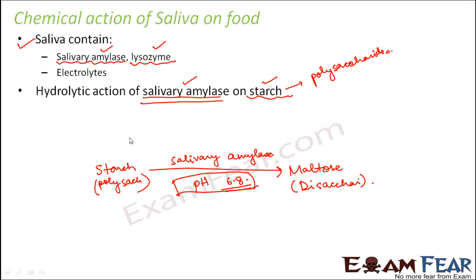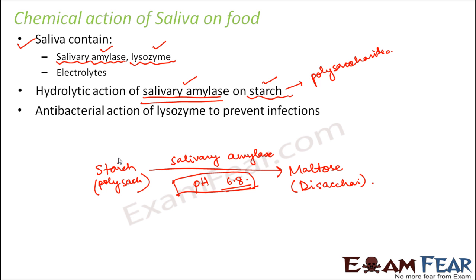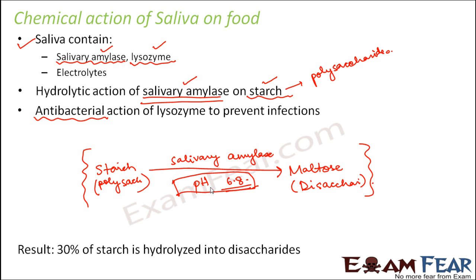The other enzyme, lysozyme, helps in preventing infection. It is known for its antibacterial action — it does not allow any bacteria to develop inside the mouth while the digestive reaction takes place. At the pH present in the mouth, microorganisms can cause infections, so lysozyme protects the mouth from such harm. The result of food passing through the oral cavity is that 30% of the starch present in the food gets hydrolyzed into disaccharides.